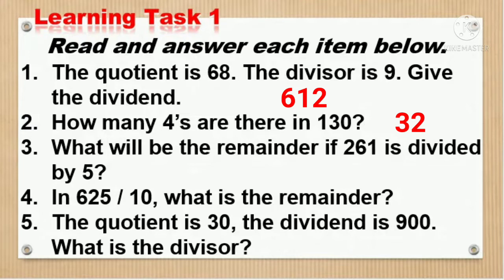Number 3 What will be the remainder if 261 is divided by 5? 261 divided by 5 is 52 remainder 1. So the remainder is 1.